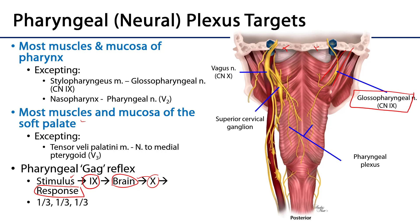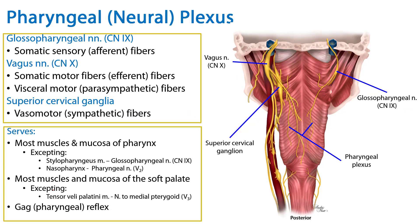The literature indicates that about one-third of the population will have a normal gag reflex, one-third will have no gag reflex, and one-third will have a hyper gag reflex which may include emesis or vomiting. We've now discussed the pharyngeal neural plexus, its inputs, and its targets. Thank you very much for your time.